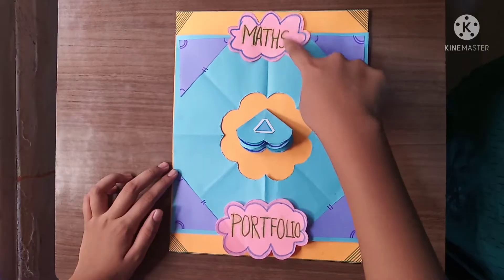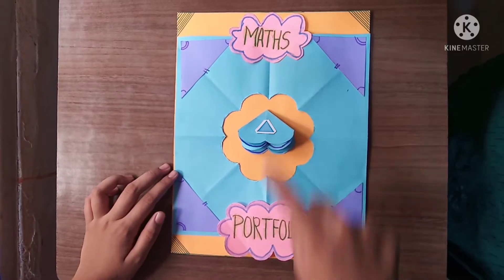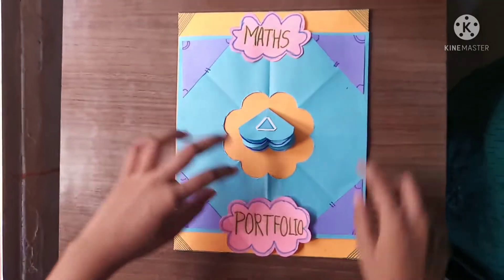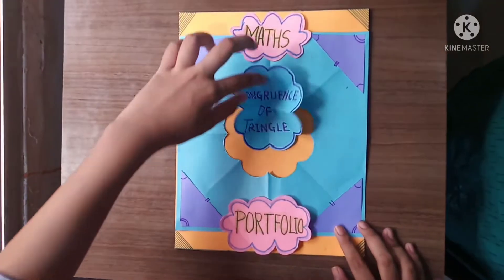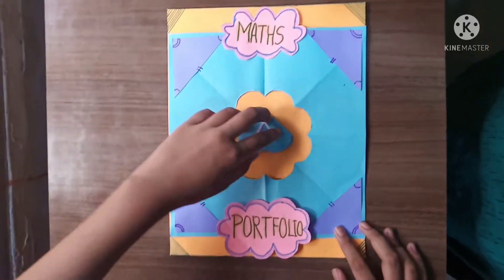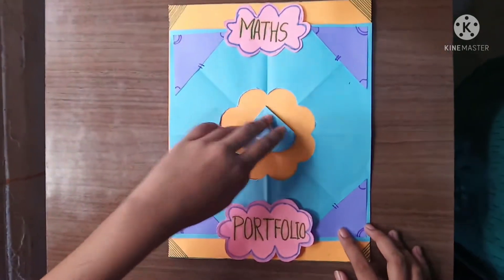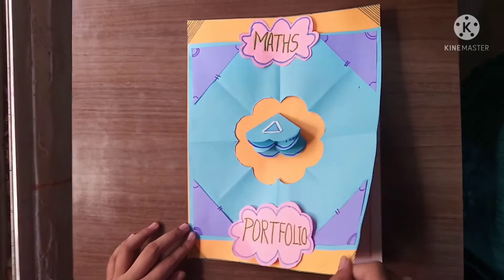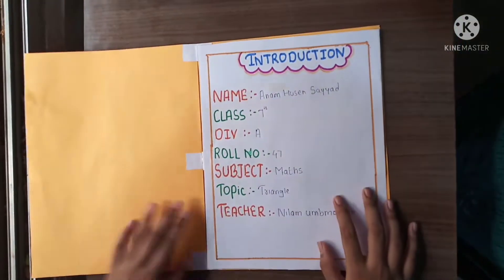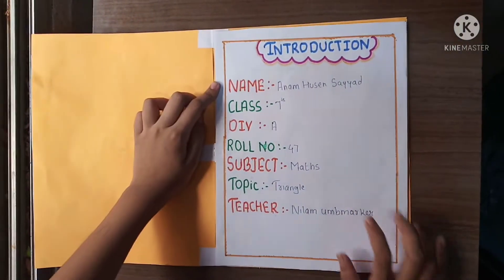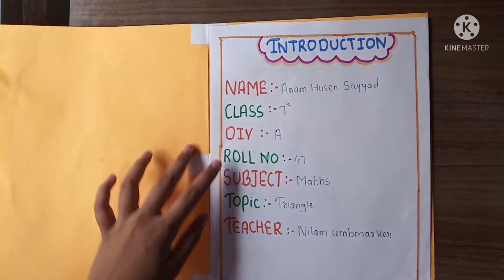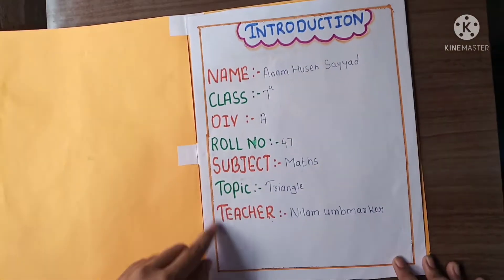I have stuck it here and written 'Math Portfolio'. I have stuck four triangles, and in the flower I have written the topic: Congruence of Triangles. Here is the introduction — name, class, division, roll number, subject, topic, and teacher.